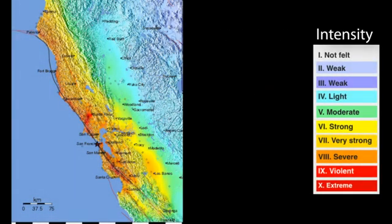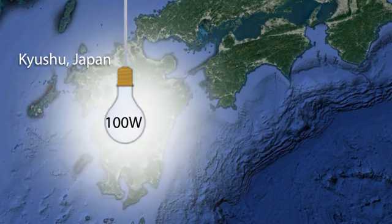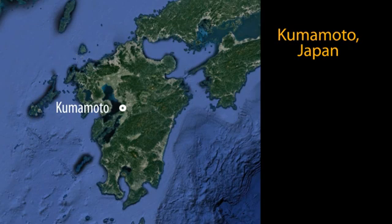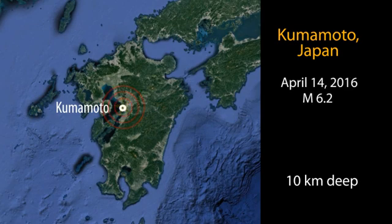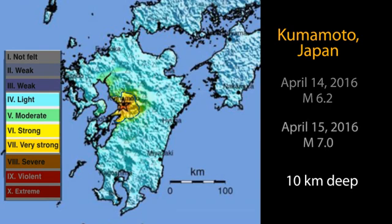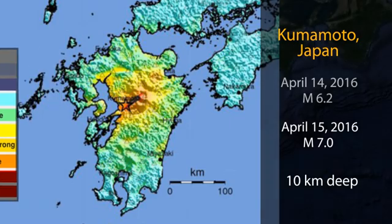Let's examine how intensity of ground shaking is controlled by earthquake magnitude. Just as a 100-watt lightbulb produces more light everywhere than a 25-watt bulb, increasing earthquake magnitude means greater intensity of shaking everywhere. Two earthquakes occurred at the same depth beneath Kumamoto, Japan, but had different magnitudes. On April 14, 2016, a magnitude 6.2 earthquake generated strong shaking up to 40 km from the epicenter. The next day, a magnitude 7.0 earthquake released 20 times as much energy, and strong shaking extended to 100 km from the epicenter — just like a larger wattage lightbulb casts brighter light everywhere in a room.